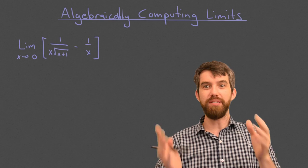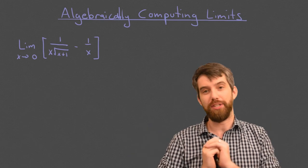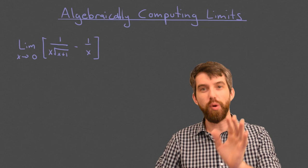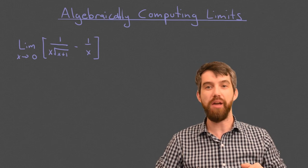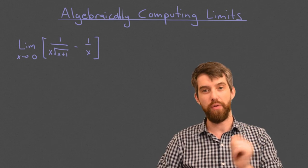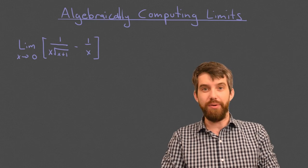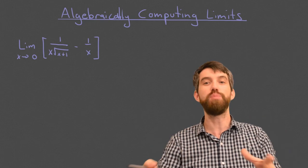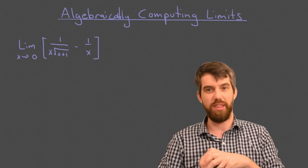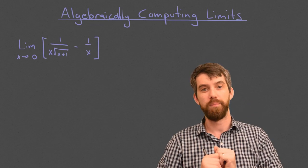In this video, I've been given a somewhat challenging limit question. This is the limit as x goes to 0 of 1 divided by x times the square root of x plus 1, all minus 1 over x. What we're going to do is perform a series of different algebraic manipulations to take this complex-looking expression and make it simpler so we can compute this limit.